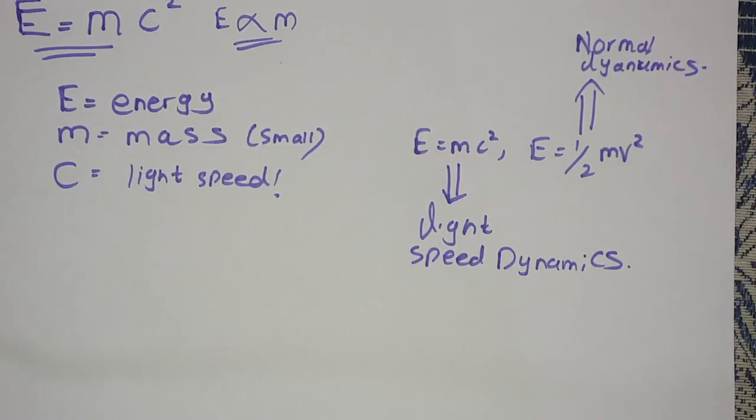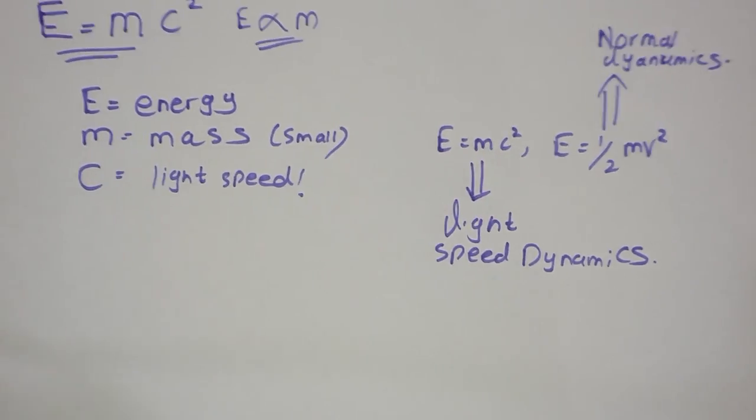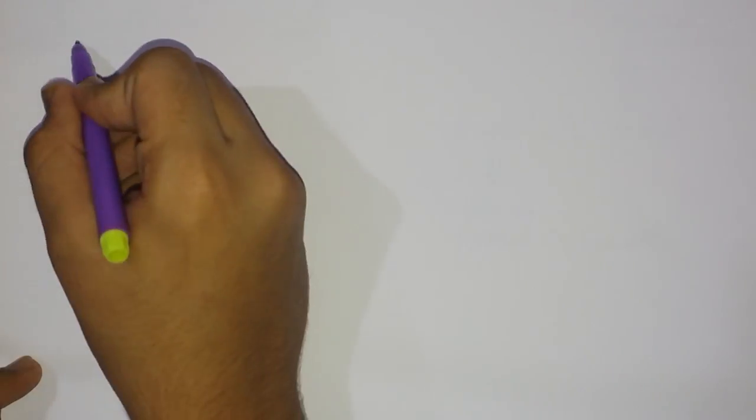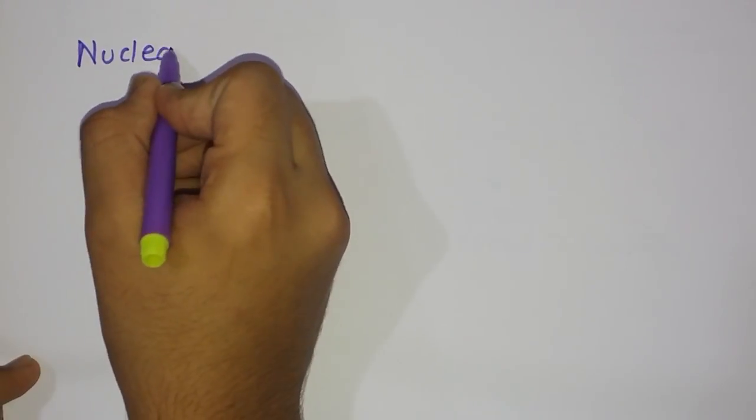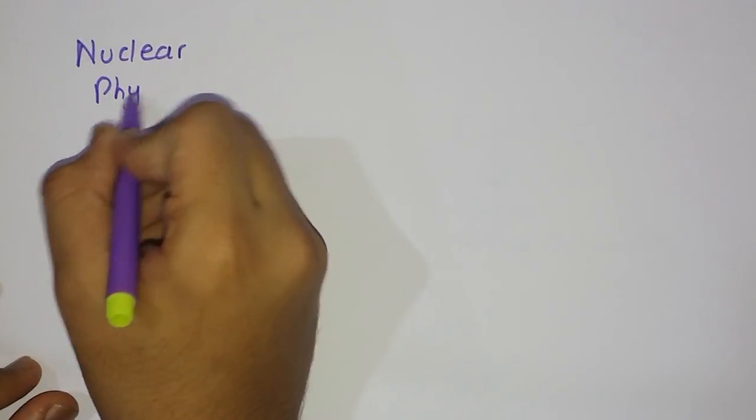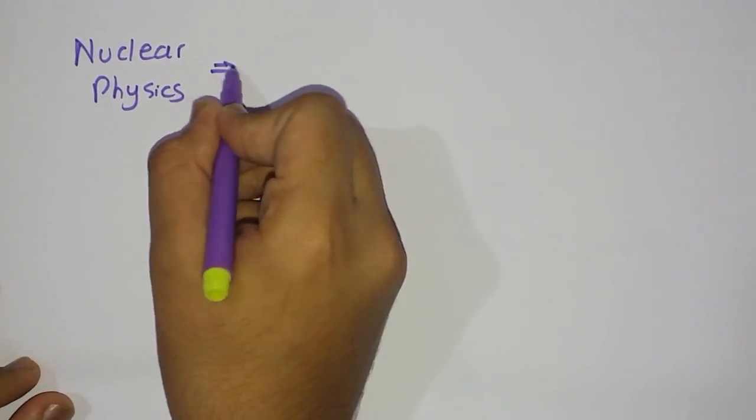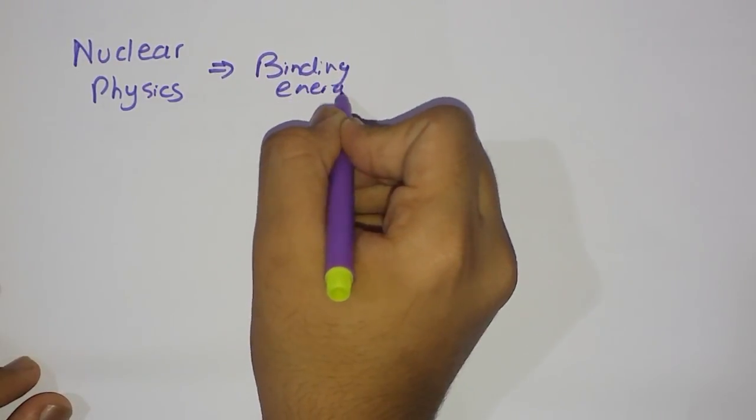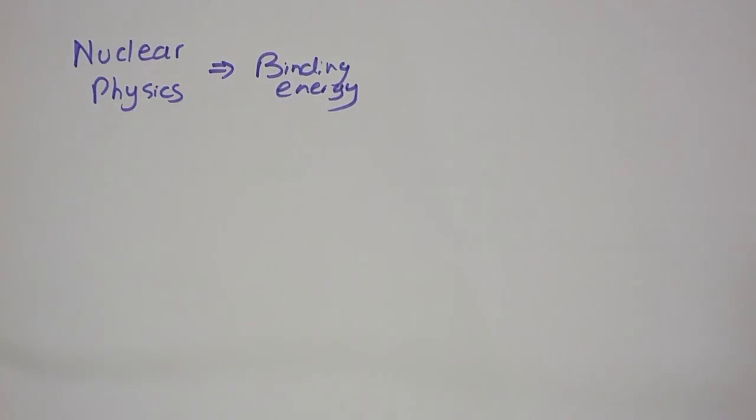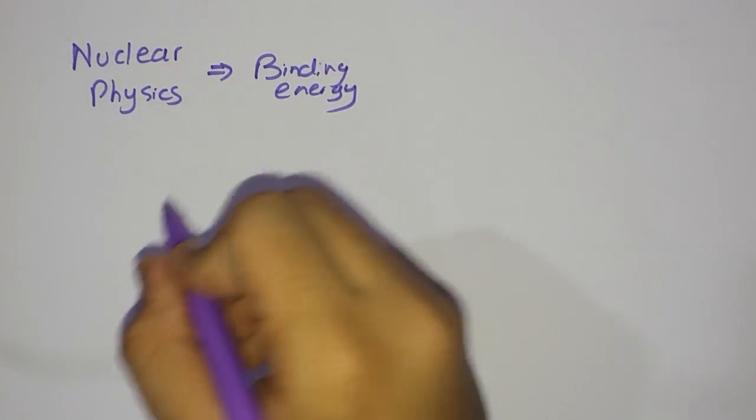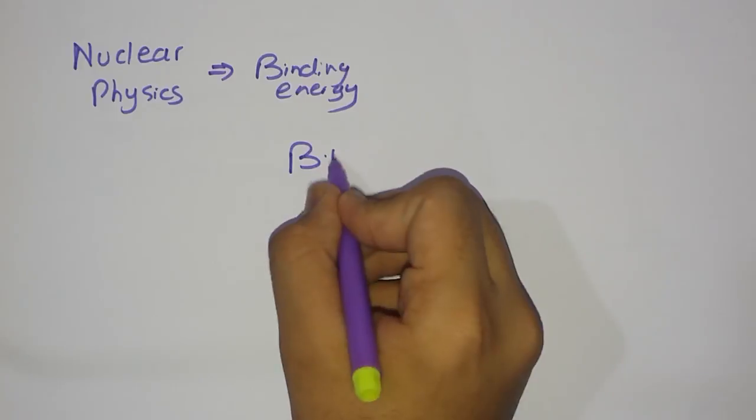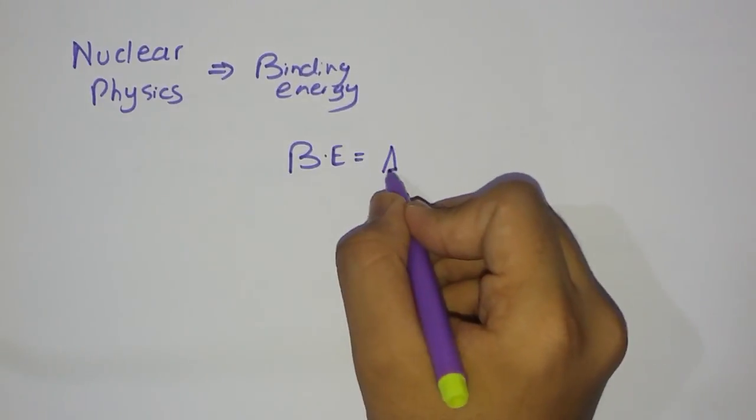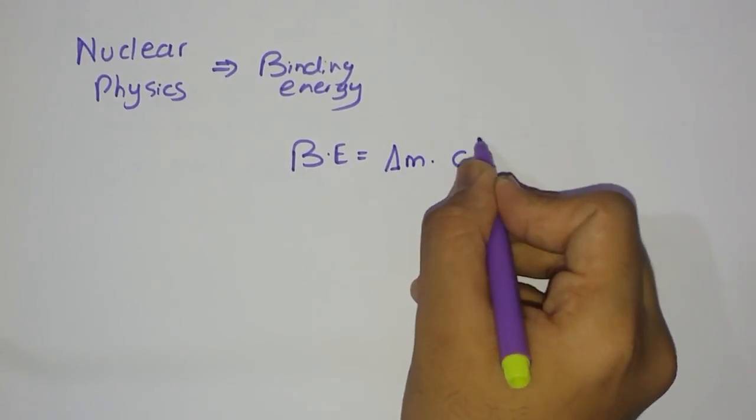And now, let's learn what are actually its applications. So, one of its applications is you must have studied in nuclear physics about the binding energy. Right? The binding energy in nuclear physics, we can say it as a formula, like binding energy equals to delta M times C squared.